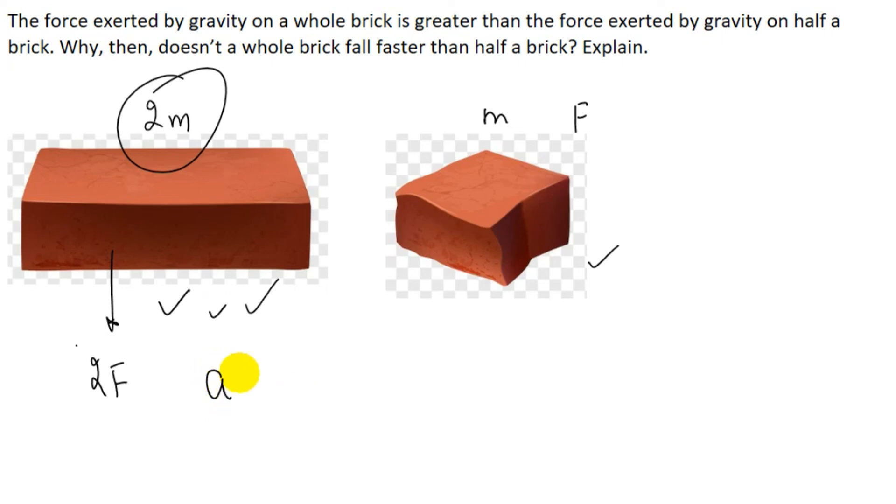From Newton's second law, acceleration equals net force divided by mass. For the full brick, we have 2F divided by 2M. The force is doubled, but mass is also doubled, so they cancel. We get acceleration F/M. For the half brick, acceleration is also F/M. In both cases, the acceleration is the same, which is why both fall at the same rate.